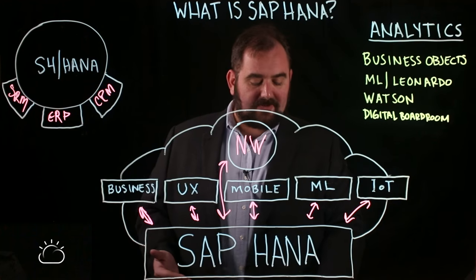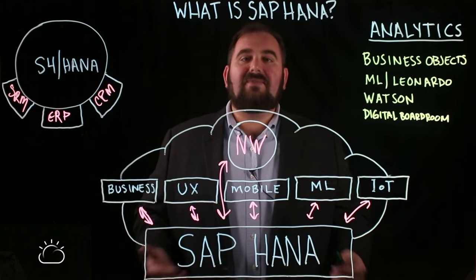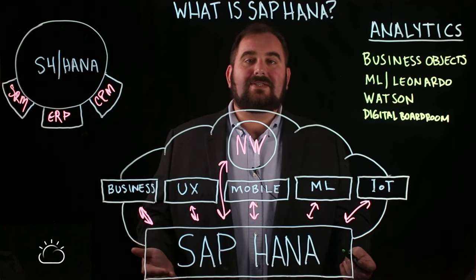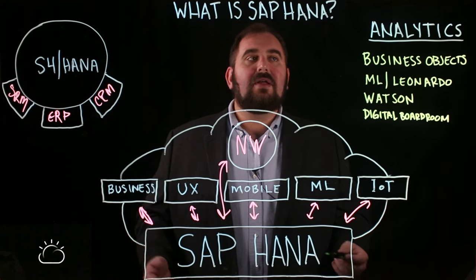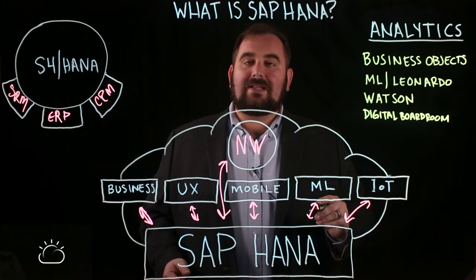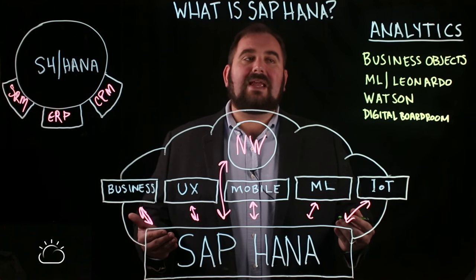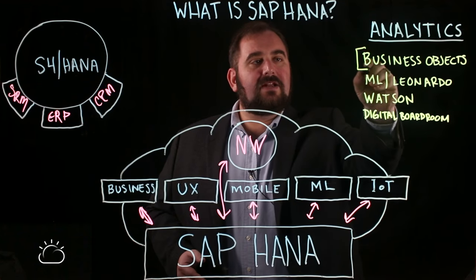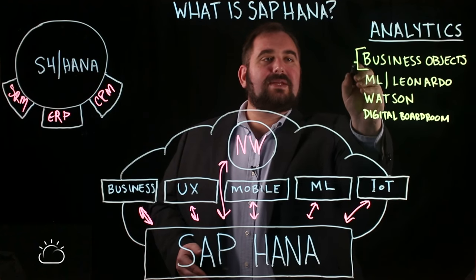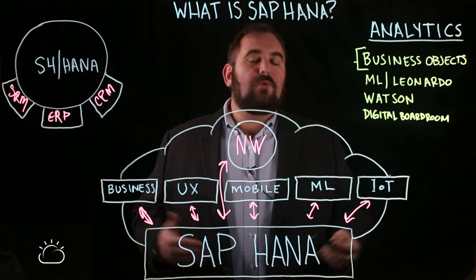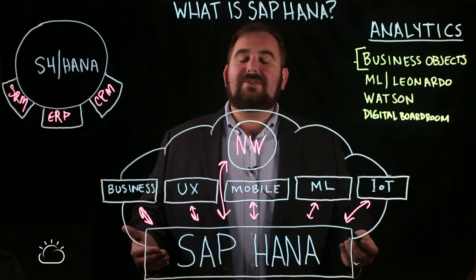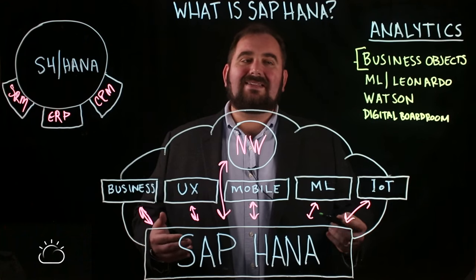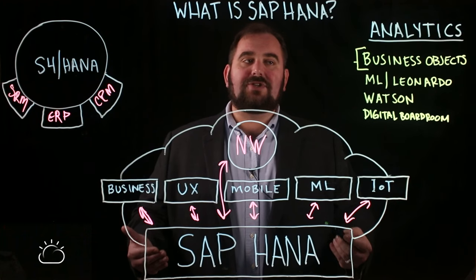Why does all of that matter? Well, what good is data if you aren't going to do things with it? Otherwise it's just sitting out there — data in a warehouse, it doesn't matter. That's where we start talking about the analytical pieces. I like to break analytics up into three levels. The first level is your tactical level — that's going to be your Business Objects. That's a WYSIWYG editor where any employee with access to the system can put together a query to get the data they need to do their job.